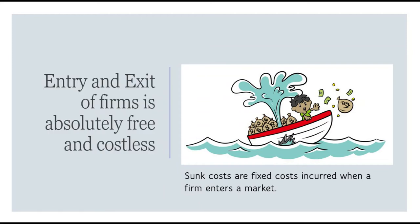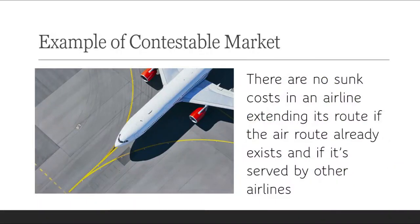A common example of a contestable market is an airplane service on a particular route, say Mumbai and Chennai, which is already being served by other airlines. An airline currently flying between Mumbai and Bangalore can easily extend its service to Chennai if it faces the same cost as the existing airlines, and can easily return to its old route of Mumbai–Bangalore without incurring any sunk costs. So both entry and exit do not involve large expenditures.